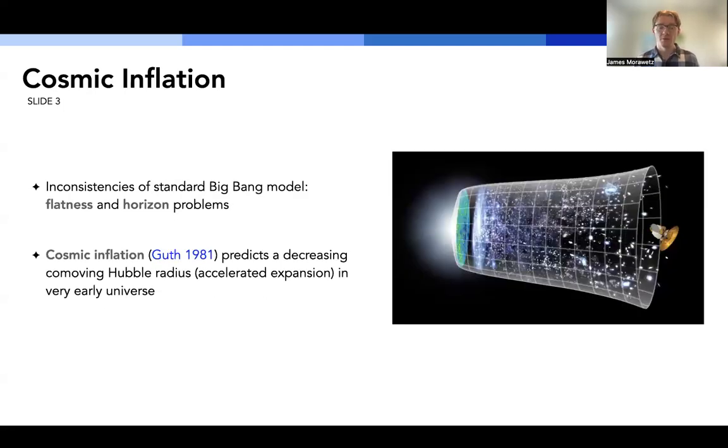So to begin, cosmic inflation was first introduced in the early 1980s, and it predicts a period of accelerated expansion, or equivalently a decreasing co-moving Hubble radius with time in the very early universe. And this idea was first introduced in order to reconcile some of the inconsistencies that one arrives at through a standard interpretation of the Big Bang model, such as the flatness and horizon problem. And both of these problems require an extremely fine tuning of initial conditions in the very early universe in order to explain its present day properties. And cosmic inflation gives us a physical mechanism for generating these fine tuned initial conditions, so we do not have to rely on pure coincidence.